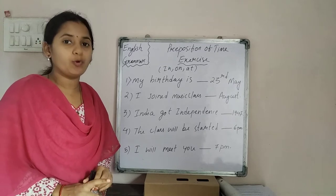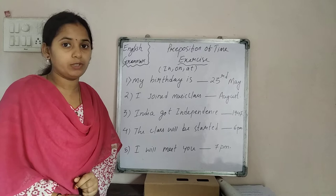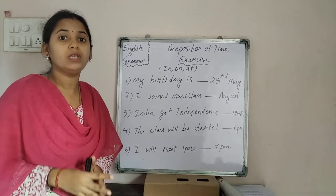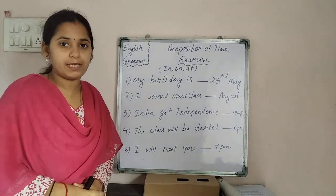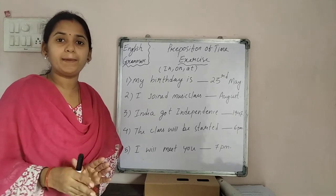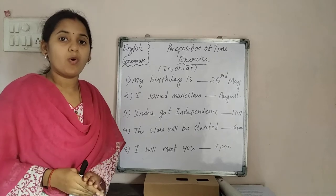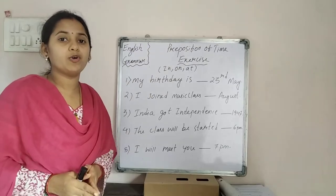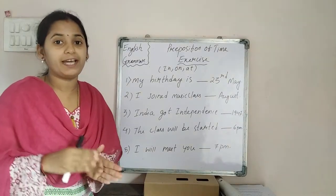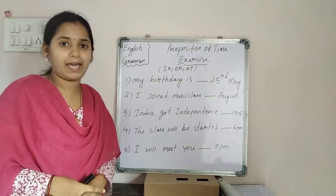Already I have told you that preposition means what? A preposition is a word which shows the relation of the noun with the other words of the sentence. The other words in the sentence may be a verb or may be an adjective.